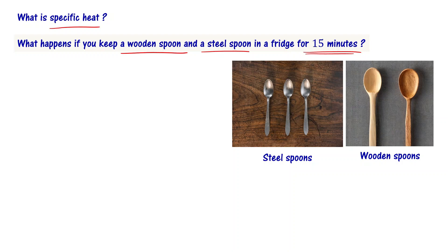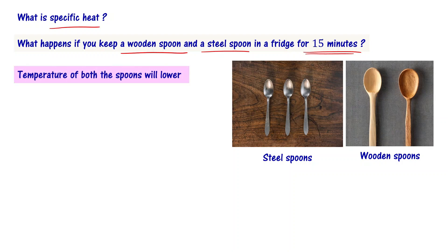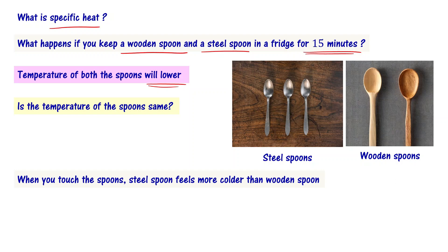The fridge maintains a low temperature, so the temperature of both spoons will reduce. Now the question is: is the temperature of the wooden spoon and steel spoon the same? The temperature is the same. Let us touch the spoons and see. When you touch the spoons, you feel that the steel spoon is colder than the wooden spoon.